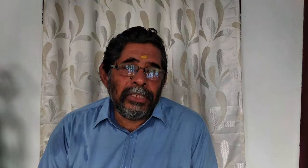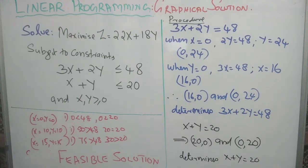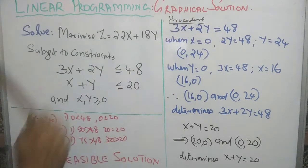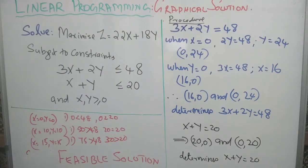The graphical method suggests values for decision variables which optimizes the objective function with respect to constraints. A linear programming problem in two variables may be solved by the graphical method.